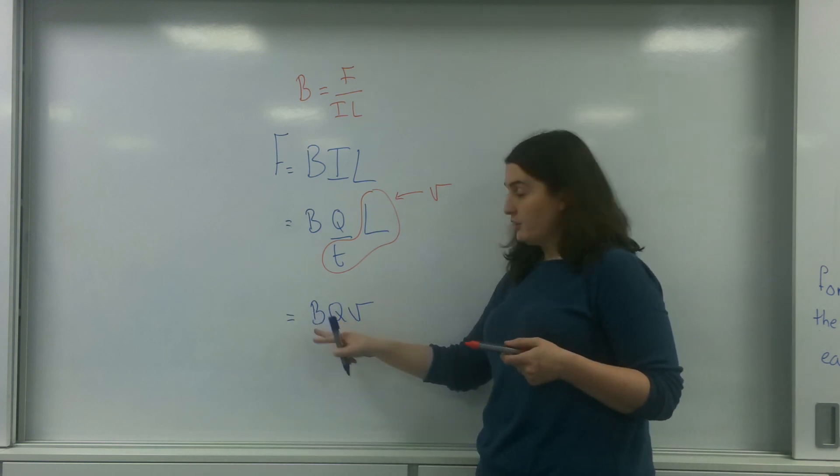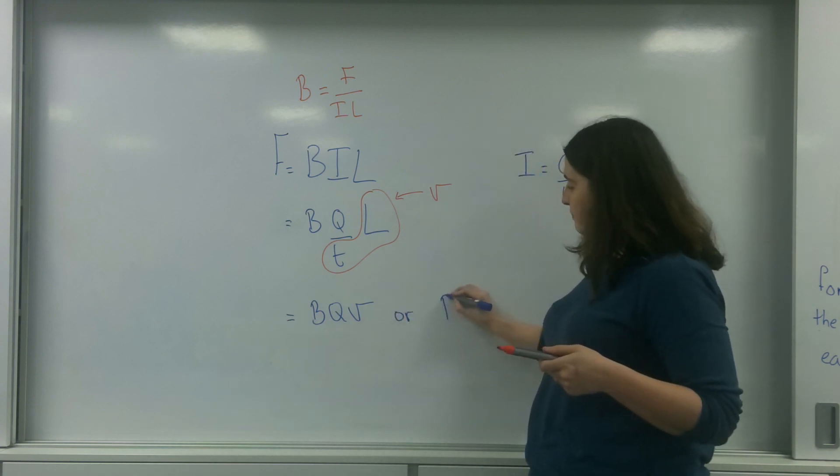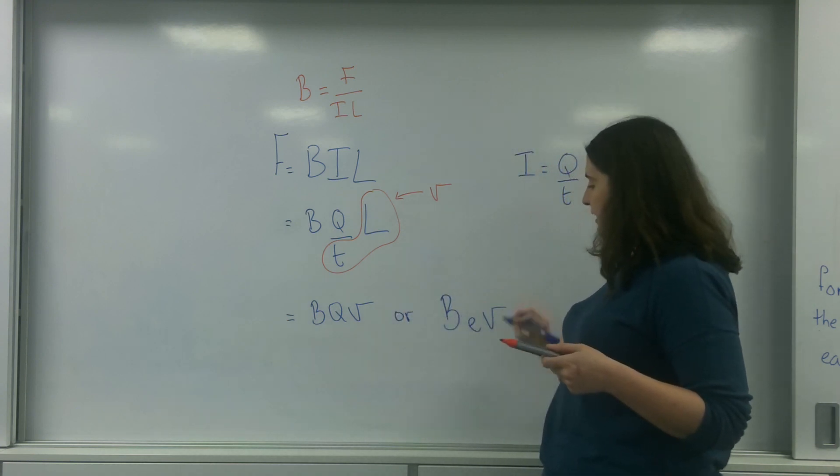Magnetic field strength times by a moving charge. And in the case of an electron, it's B, E, V. Bev.